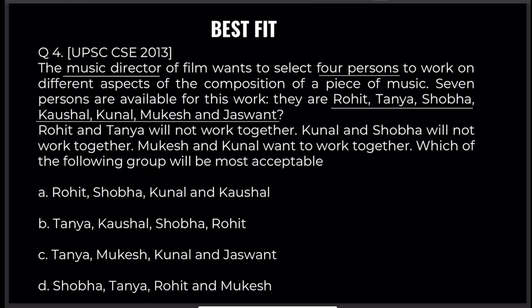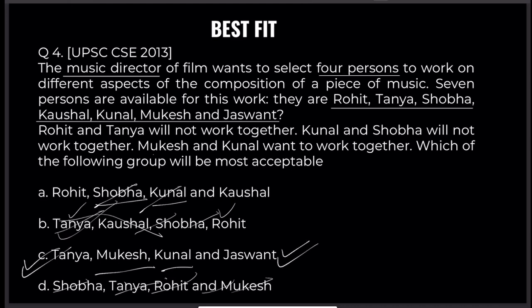Which of the following groups will be most acceptable? Let's go directly by the options and solve using the elimination method. Option A has Rohit and Tanya together — but they won't work together, so A is eliminated. Checking other options against the constraints — Kunal must be with Mukesh. Option C satisfies all the conditions, so C is the answer — very simple. Just use the method of elimination.